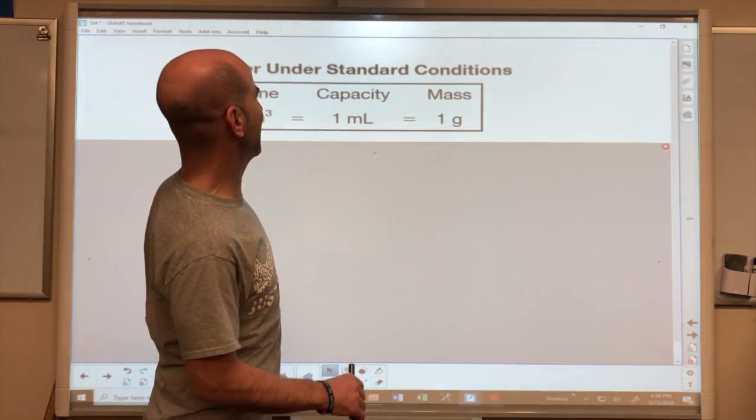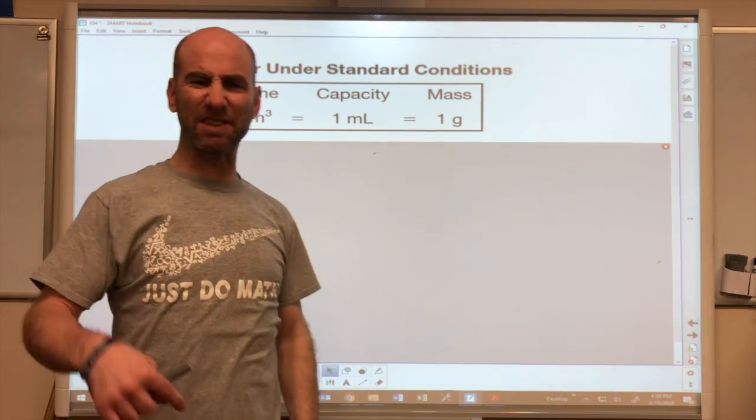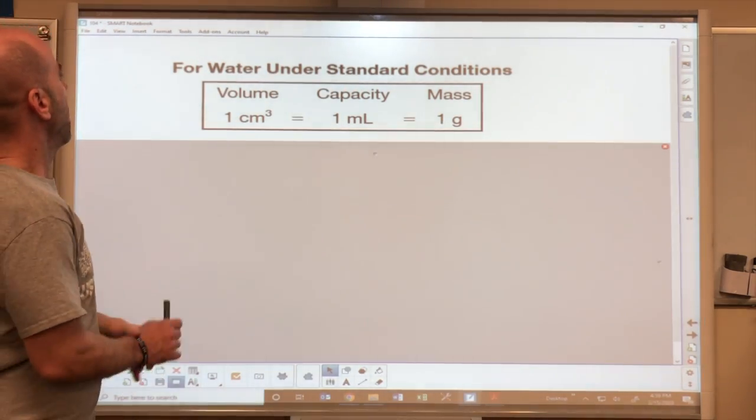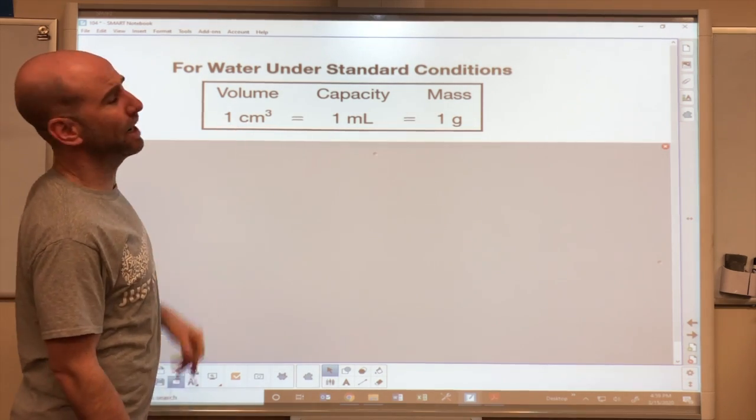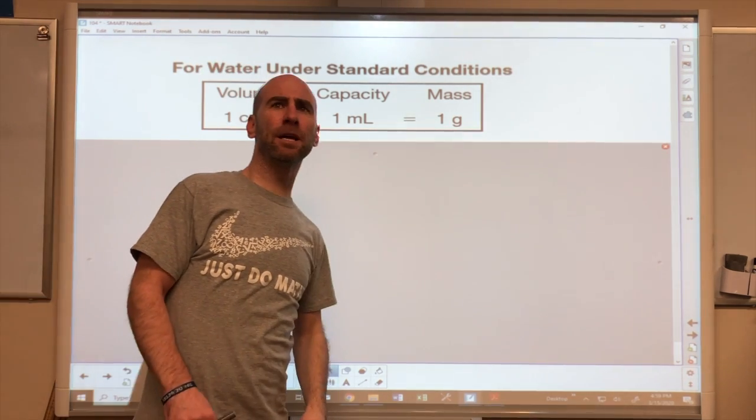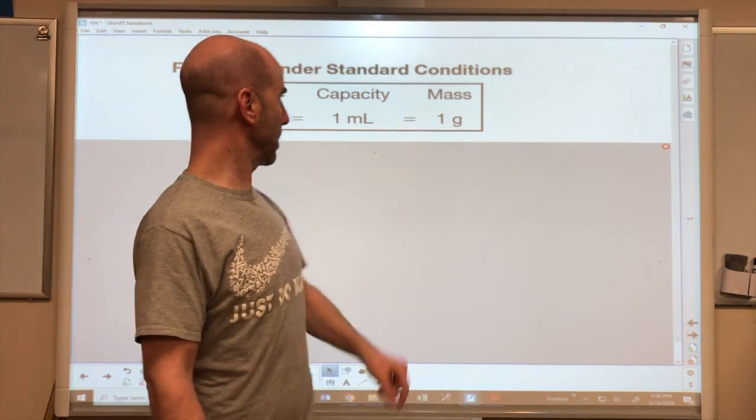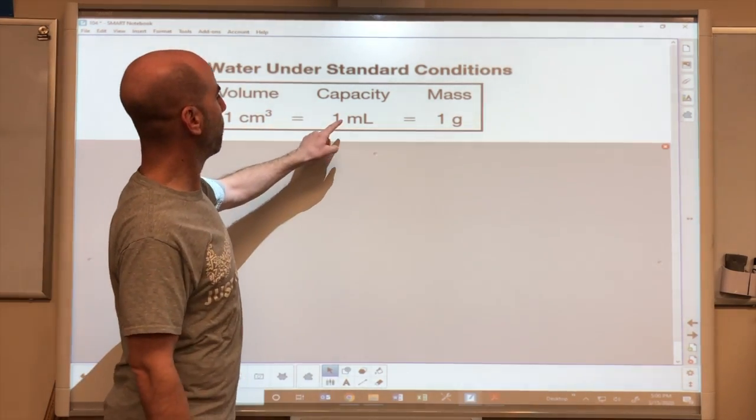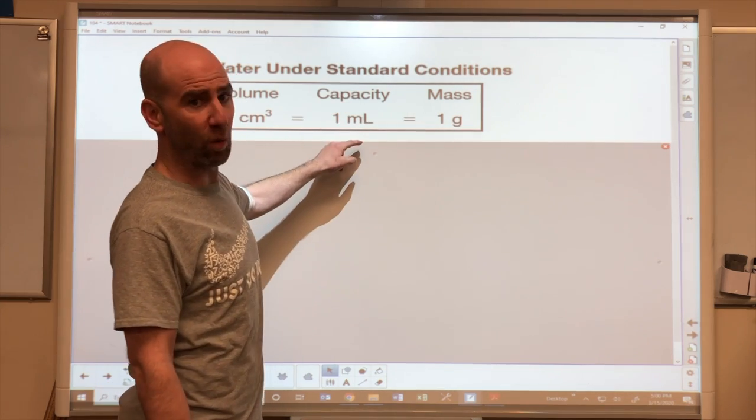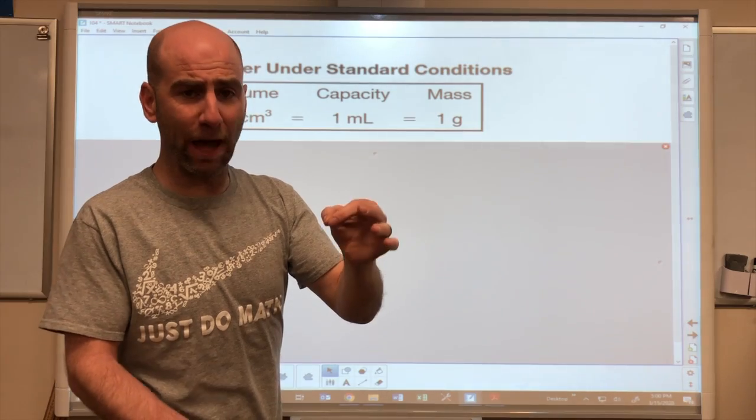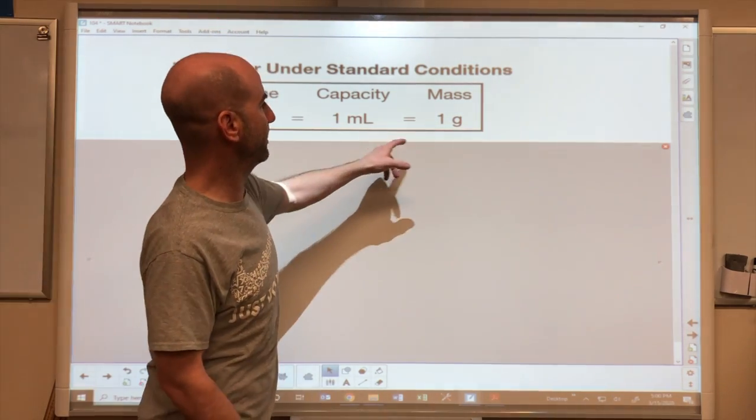The first is this. So pause the video, jot this stuff down. We've got a cubic centimeter, which is a little smaller than a dice, contains one milliliter of water, and the amount that that water weighs is one gram.